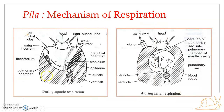Air always moves through the respiratory siphon into the pulmonary chamber, then through the pneumostome into the pulmonary sac, where gaseous exchange occurs. After exchange, the air moves back out through the pneumostome into the pulmonary chamber and out through the respiratory siphon. The inflow and outflow of air is maintained by the alternate expansion and contraction of the pulmonary sac — unlike aquatic respiration, cilia do not assist here.